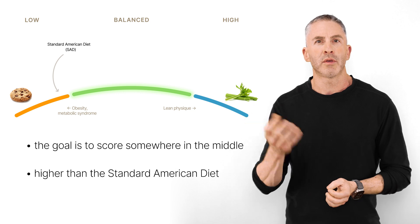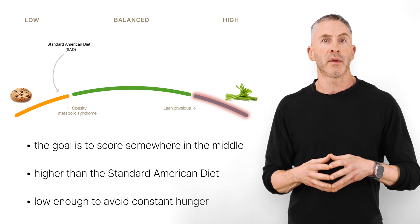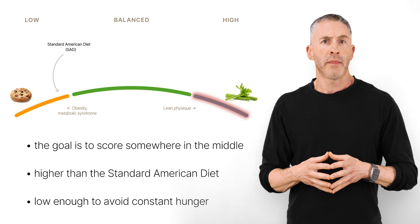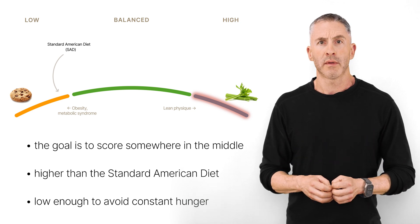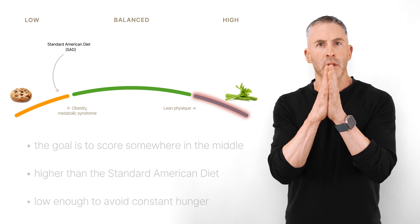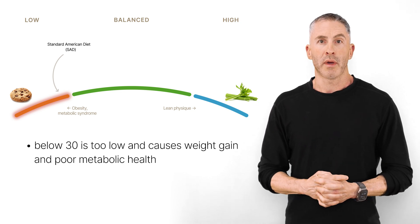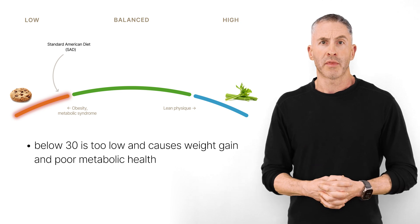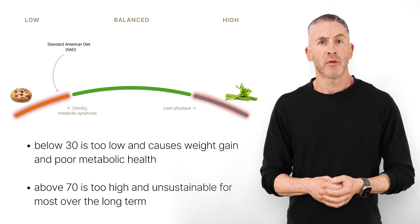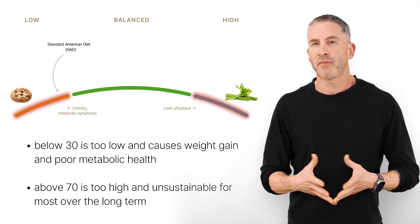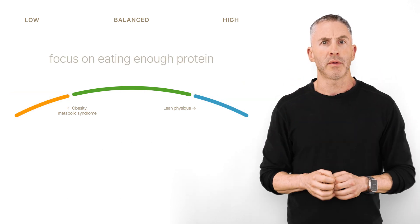The goal of the HAVA app is to score somewhere in the middle — higher than the standard American diet, which scores in the high 20s, maybe 27 to 29, but not so high that you're hungry all the time. A competitive bodybuilder living on egg whites, cucumbers, and whey powder might score 80-plus, but that's unsustainably hungry. Below 30 is clearly too low — that's where most Americans are, and they're gaining a pound or two a year and ending up 30-plus pounds overweight. A satiety score of 70-plus is probably unsustainably high for most people long-term.